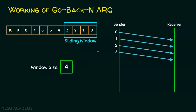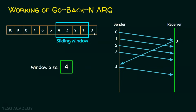The sender expects an acknowledgement for frame 0. The receiver sends an acknowledgement for frame 0, so frame 0 is successfully received. The sender then sends the next frame — frame number 4 — and the window slides. Frame 0 is now acknowledged and no longer a concern. Frames 1, 2, and 3 are still waiting for acknowledgement, and frame 5 onwards are not yet sent.